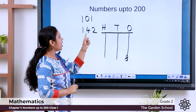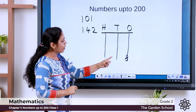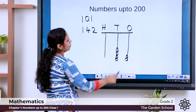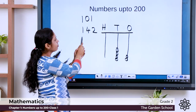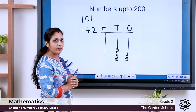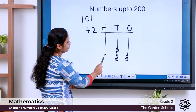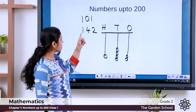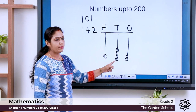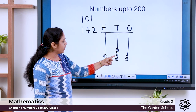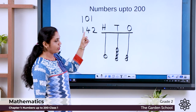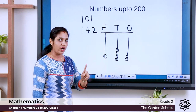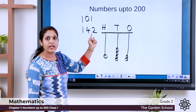Now let us move on to the tens place. How many tens? There are 4, so draw 4 beads: 1, 2, 3, 4. Now the hundreds place — there is 1, so draw 1 bead. The bead in the hundreds position represents 100. In the tens place, 1 bead represents 10, so 4 beads represent 10, 20, 30, 40. In the ones place, 1 bead represents 1, so 2 beads represent 2. And we get the number 142.